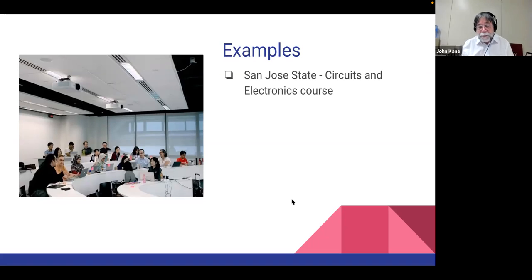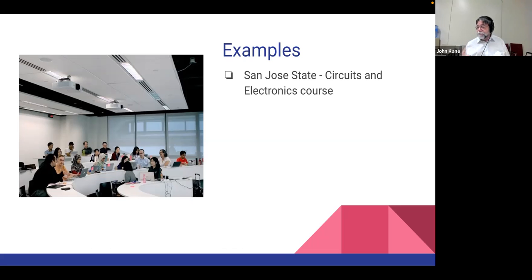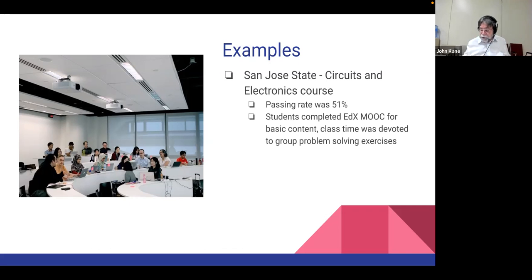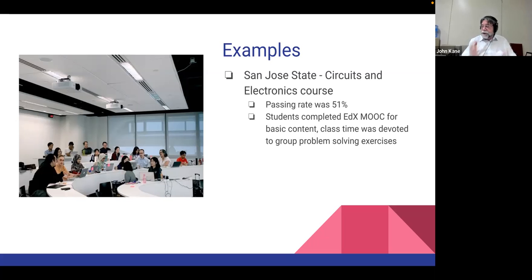At San Jose State, they had a circuits and electronics course with an incredibly high failure rate. The instructor tried a flipped classroom approach and worked with an edX MOOC. The passing rate was originally 51%. Instead of creating his own content, he had students sign up for the MOOC, watching videos, working through problems, submitting practice quizzes, and presenting a certificate of completion.